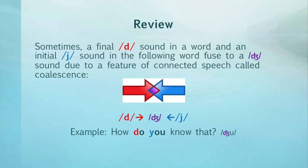To review, sometimes a final d sound in a word and an initial y sound in the following word fuse to a j sound due to a feature of connected speech called coalescence. A final example is how'd you know that?